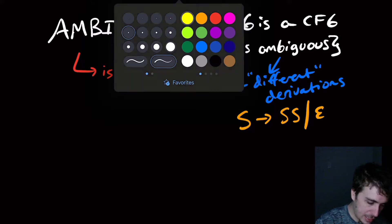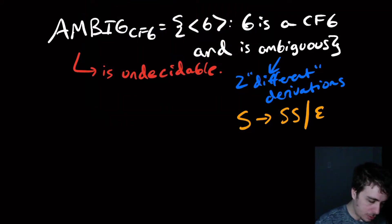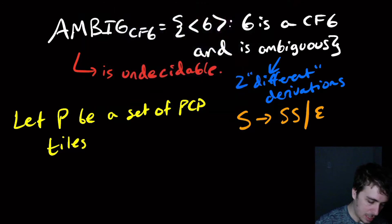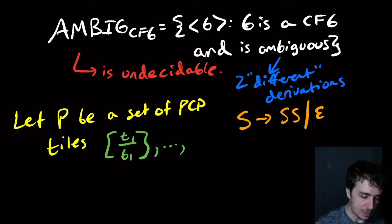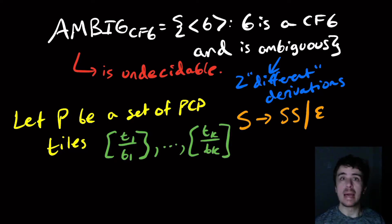We had all these tiles, and we wanted some intersection between all the strings that can be made in the top row and all the strings in the bottom row. Here's the idea—it's actually kind of slick. Let P be a set of PCP tiles: T1, B1 for top and bottom, and let's say there are K of them, up to TK, BK.